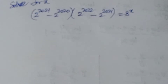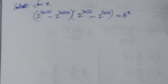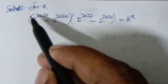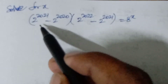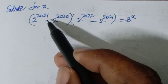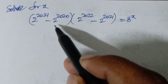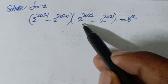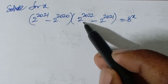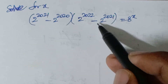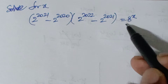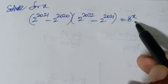Welcome to Ion CG Max. The problem is given: 2 to the power of 2021 minus 2 to the power of 2020, multiplied by 2 to the power of 2022 minus 2 to the power of 2021, is equal to 8 to the power of x.